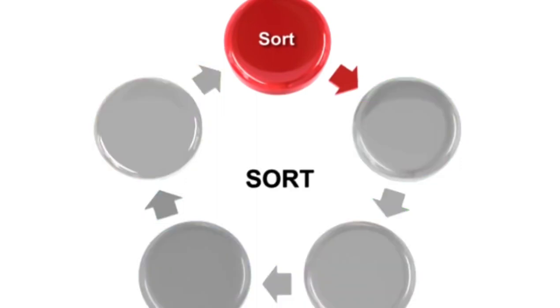The Sort function within Five S is used to define what tools are absolutely needed to perform the tasks associated with that station. Any other tools are removed from the work area using a system called Red Tagging.